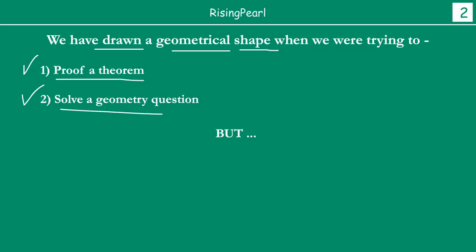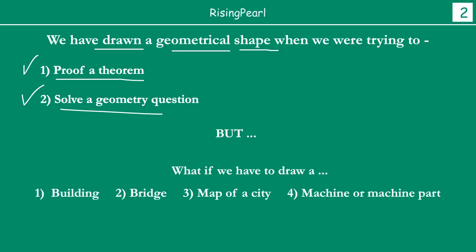Lekin, Dostho, how about agar aap ko — maan lijeye — aap ko ek building banani hai, ya phir you are drawing a bridge, ya phir aap ko ek map of a city draw karni hai, ya phir aap ko koi machine ya machine parts banani hai. So, aap sochoge, what are we talking about, kyun humain sab chezon ke baare mein baat kar rahe hain?